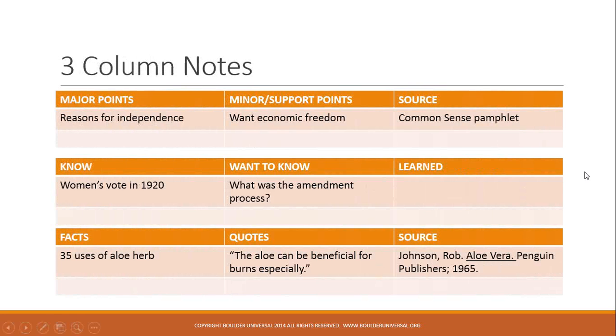Let's take a look at one type of note taking that we can do. This is called three column notes. And as you'll see, I actually gave you three different examples for three column notes. The top one up here is where I have the reasons for independence as our major point, and then the minor and supporting point is the desire for economic freedom, and then the source would be the common sense pamphlet. So that's something that I might use as I'm reading through materials. I'm writing this down in a manner that uses the three column notes where I have my major points on the left, my supporting points in the middle, and my source on the far right.